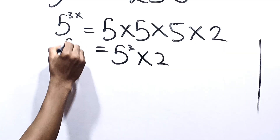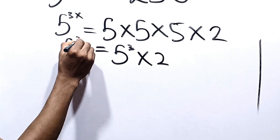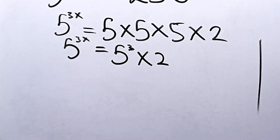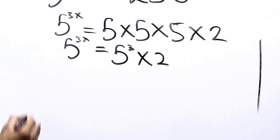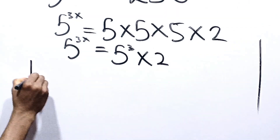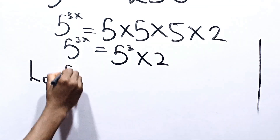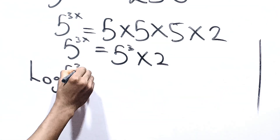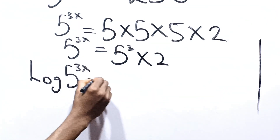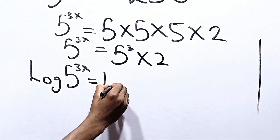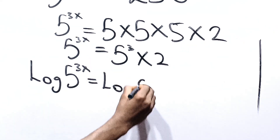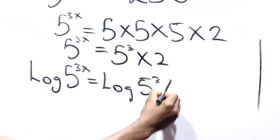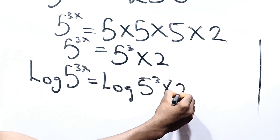And this is 5 raised to the power 3x. At this point, we can take the logarithm of both sides. So we have the logarithm of 5 raised to the power 3x equal to the logarithm of 5 raised to the power 3 multiplied by 2.